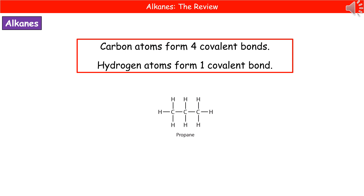The other kind of formula they could ask you to write in the exam is the displayed formula. Remember two key rules: a carbon atom forms four covalent bonds, and a hydrogen atom forms one covalent bond. For example, to draw the displayed formula for propane — 'prop' tells us there are three carbons, '-ane' tells us it's an alkane with only single bonds. Place the three carbon atoms as the backbone, ensure each carbon has four bonds, then fill remaining bonds with hydrogen. Check using the general formula: C3H8 — three carbons and eight hydrogens around the outside.